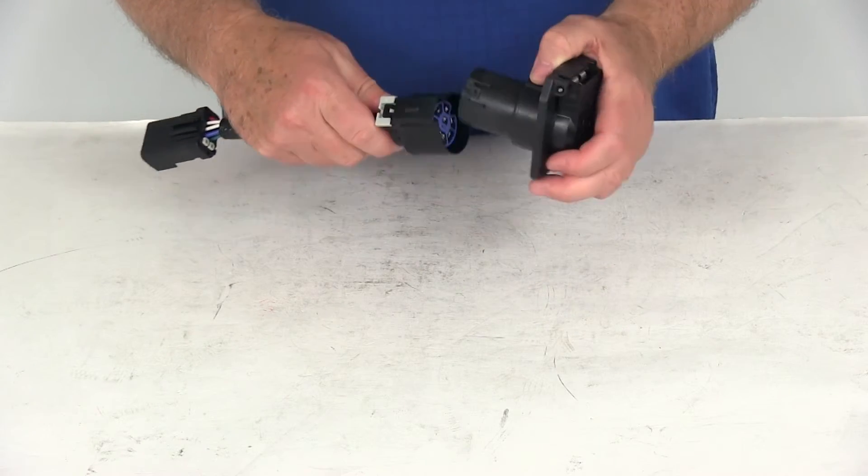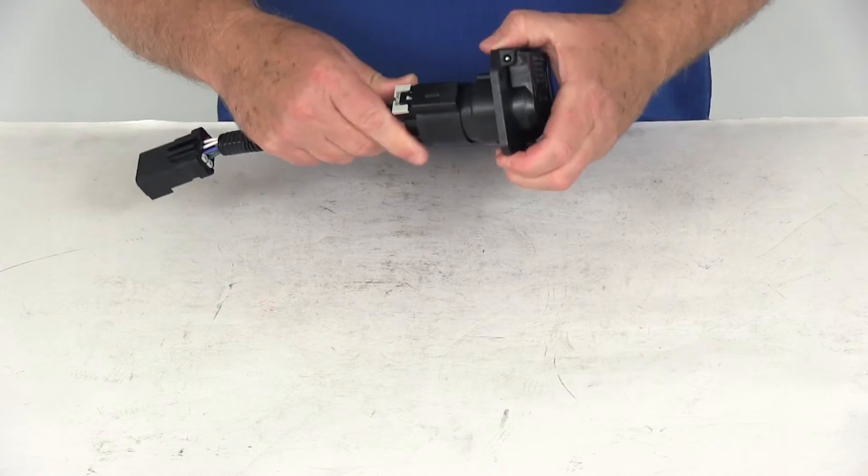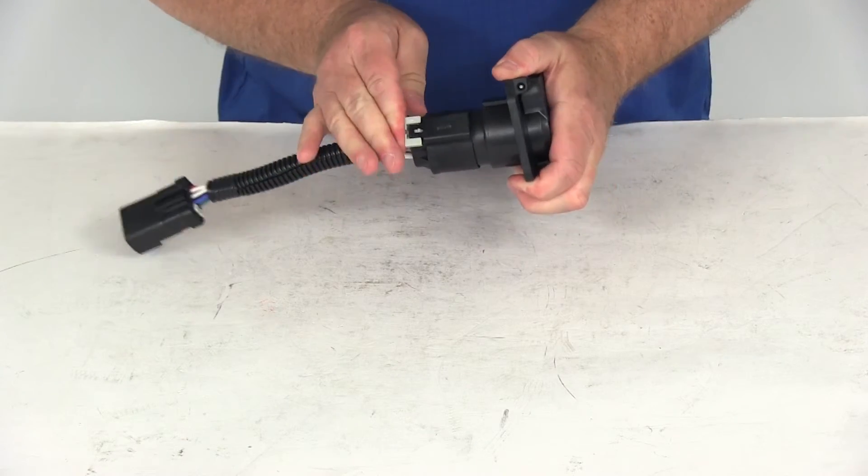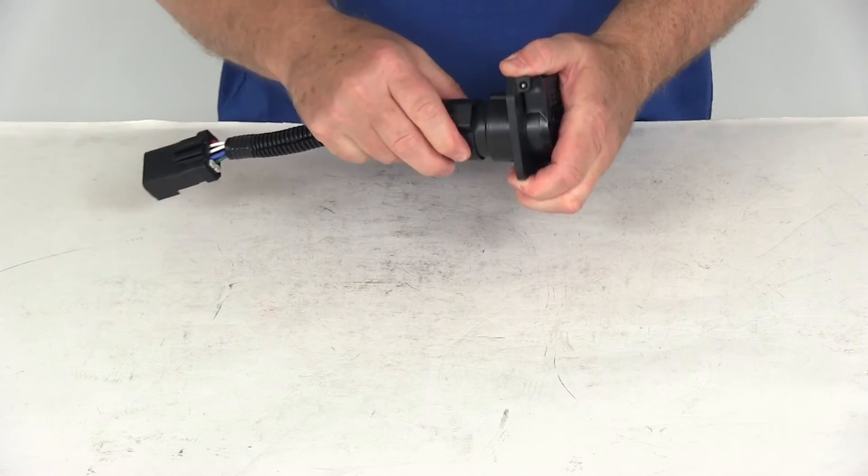Take this, just line it up. Push it on. Once it clicks into place, go ahead and push the gray tab in. That will lock it to keep it from coming off.